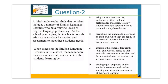Question number two: Same scenario — a third grade teacher with ELLs of varying proficiency levels. When assessing English language learners, the teacher can best ensure accurate assessment of student learning by: A) using various assessments including written, oral, and performance measures to allow multiple opportunities to show what they've learned; B) permitting students to determine on their own when they are ready to be assessed; C) assessing students frequently on a weekly basis so the amount of material assessed is minimized; or D) placing equal emphasis on teacher assessment and student self-assessment.